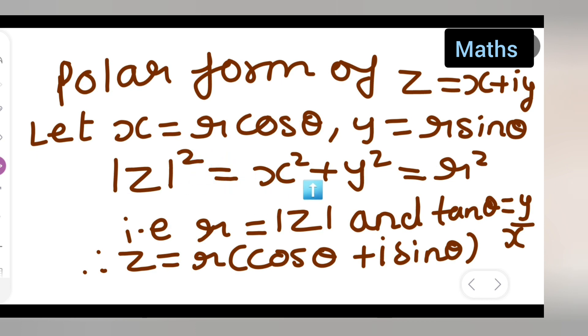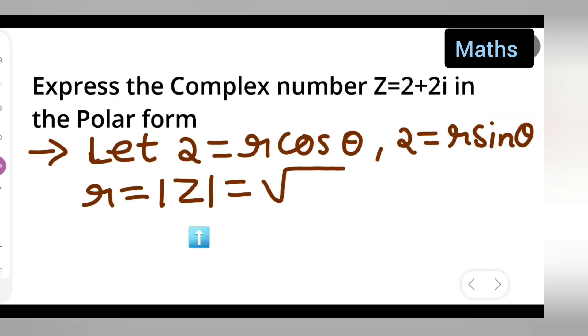So square root of x square, 2 square will be 4 directly. So let me write 4 plus 4, which is equal to root 8.